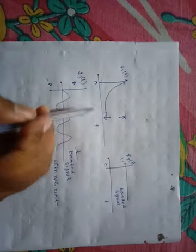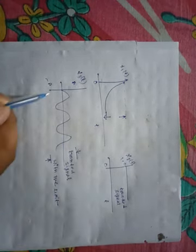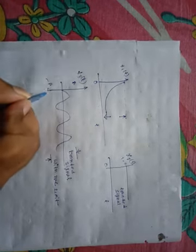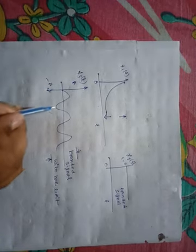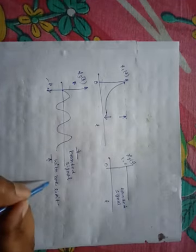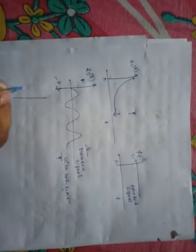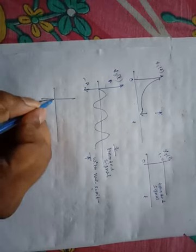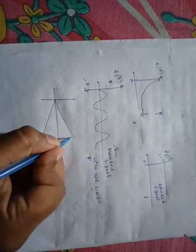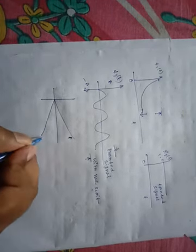A bounded signal is one that stays within limits — for example, signals x1, x2, x3 here are bounded signals with positive and negative amplitude. The input x3 is bounded and the output is constant, meaning the signal stays within its limit. An unbounded signal is one where the output grows without bound.